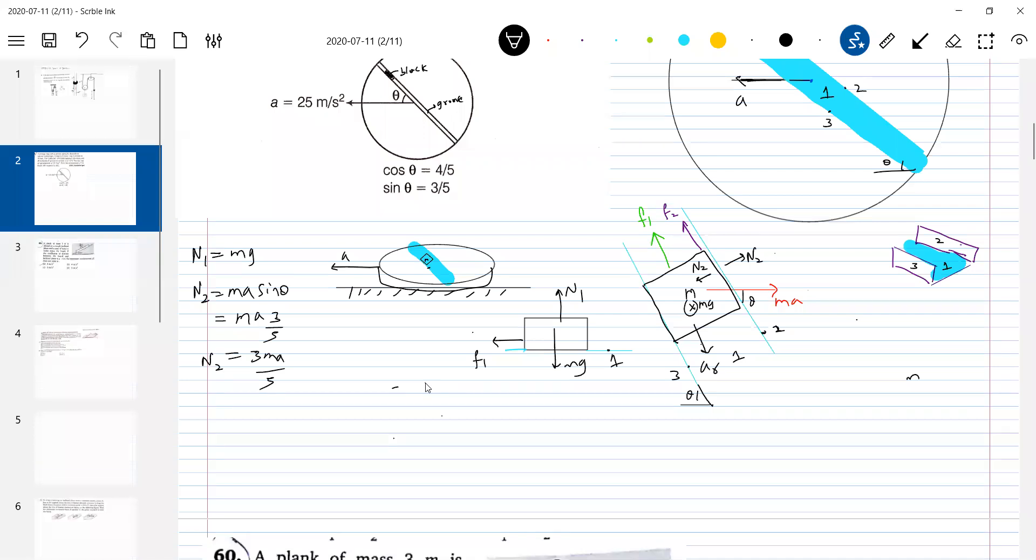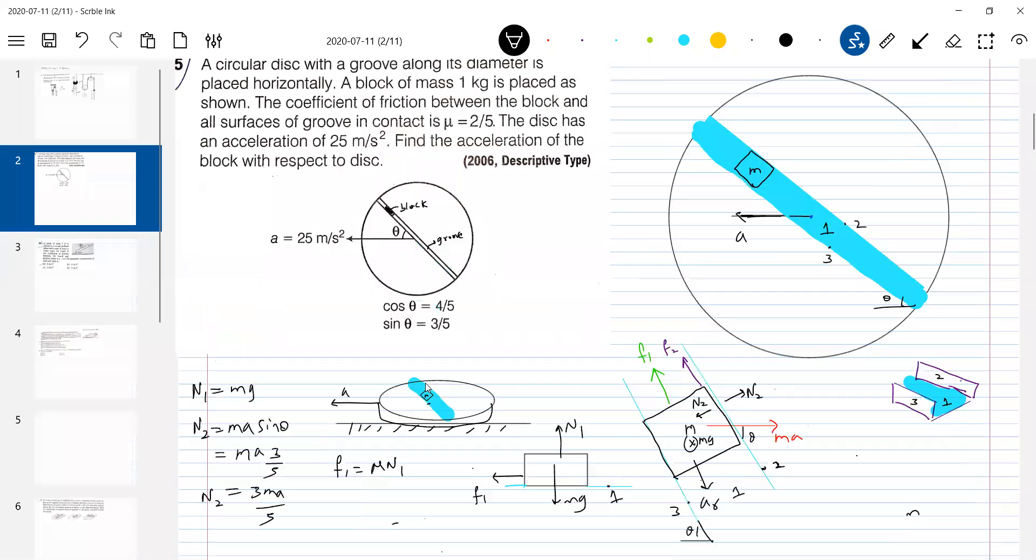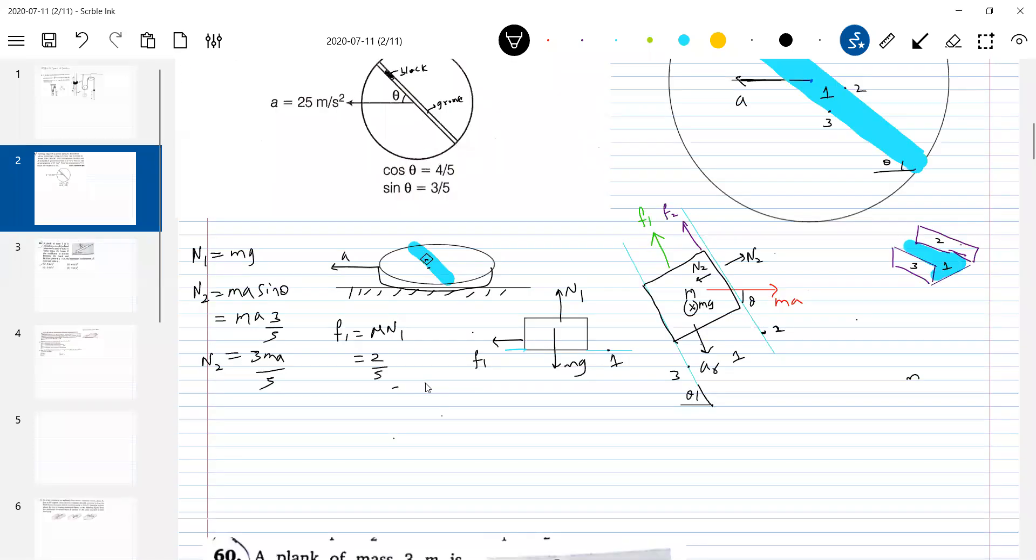First we'll calculate F1. What is F1? F1 should be equal to mu N1. What is the value of mu? 2 by 5. So 2 by 5 mg. This is F1. Similarly what is F2? Mu N2. Mu is how much? 2 by 5. 3 ma by 5. So this will be 6 ma by 25. Let's write equation of motion. Ma cos theta minus F1 minus F2 equal to M A R. We'll substitute all the values. So what is the acceleration equal to 25? Cos theta 4 by 5. What is F1 value? F1 is 2 by 5 mg. F2 is 6 ma by 25 equal to M A R.